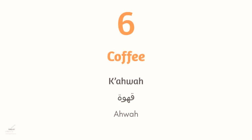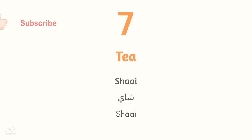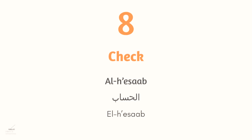The sixth word is coffee: قهوة in MSA, and as mentioned, أهوة in Egyptian Arabic because the قاف becomes an easier أ sound. The seventh word is tea: شاي, which is the same in both MSA and Egyptian Arabic. The eighth word is check: الحساب, also the same in both.